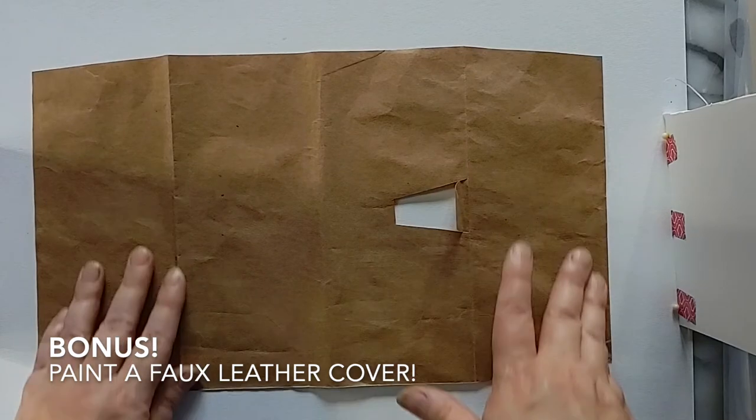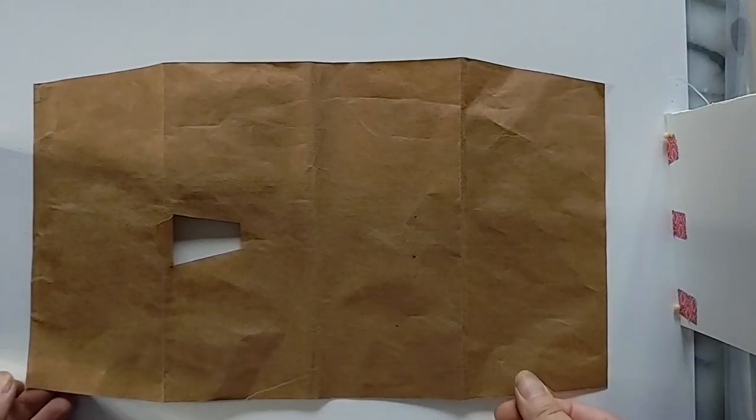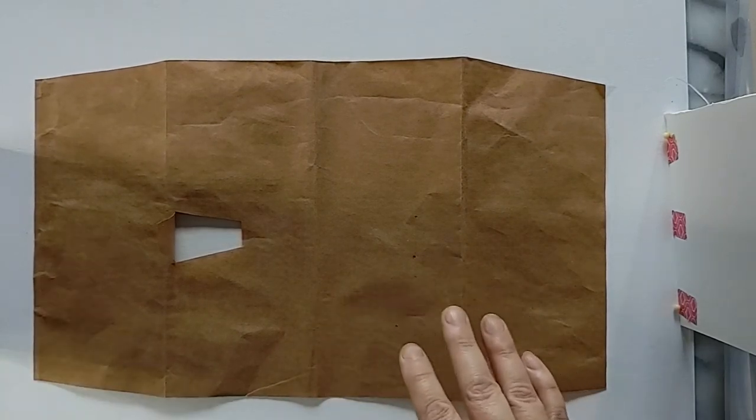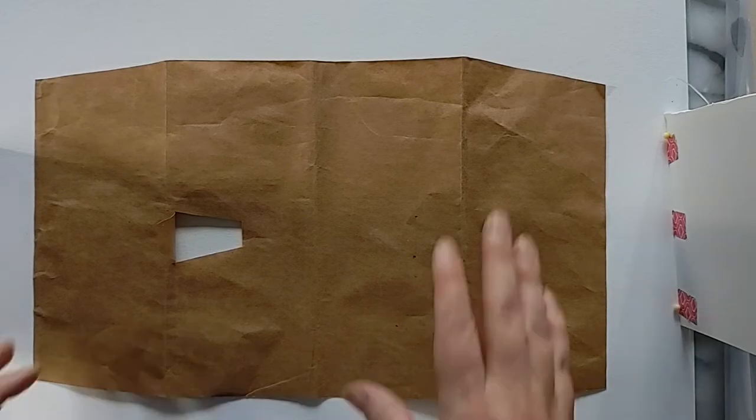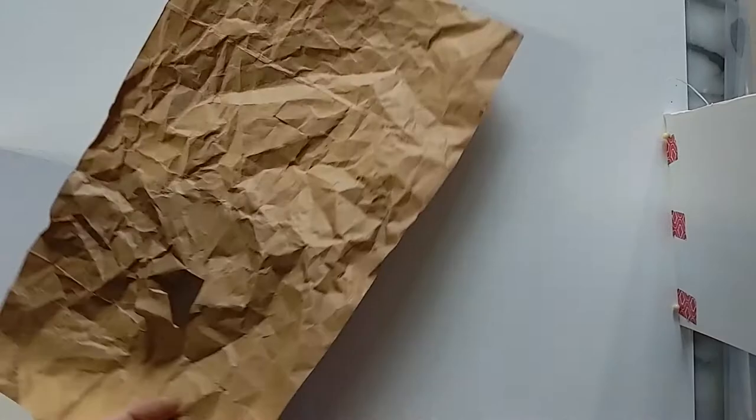So here is my cover. I've taken it off my book. And I'm just going to show you that technique for making it look sort of leather-like. So the first thing that you need to do is scrunch the whole thing up. So there, I've scrunched it up and I've flattened it out again.